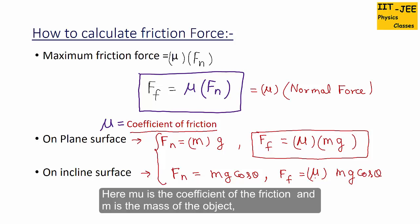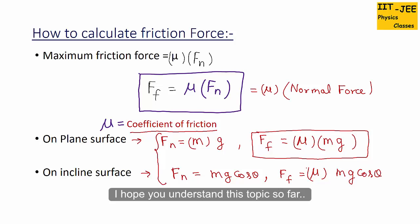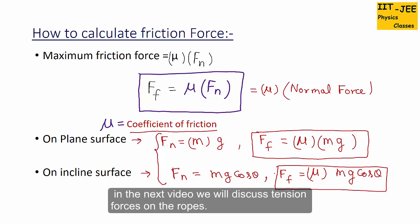Here, μ is the coefficient of friction, M is the mass of the object, G is gravitational acceleration — constant for Earth at 9.81 m/s² — and θ is the angle of the incline surface. In the next video we will discuss tension forces on ropes.